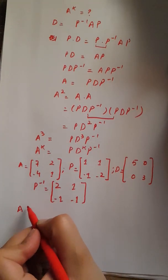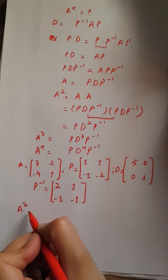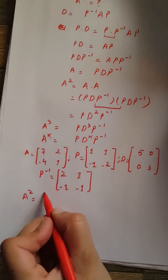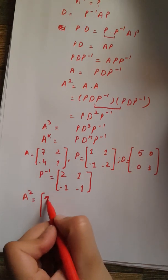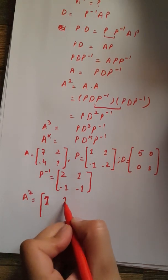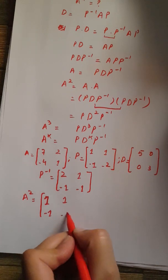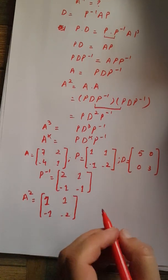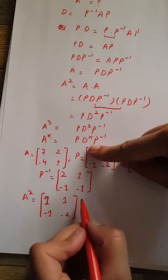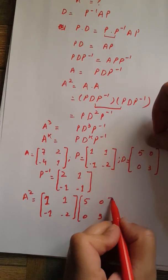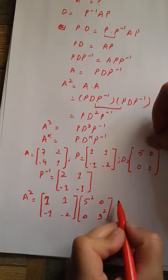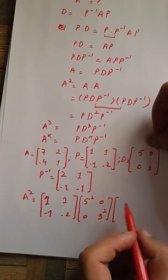Let's compute A to the power 2. We write P, which is [1, 1; -1, -2], then D squared, which is [5 squared, 0; 0, 3 squared], and let's compute their square.